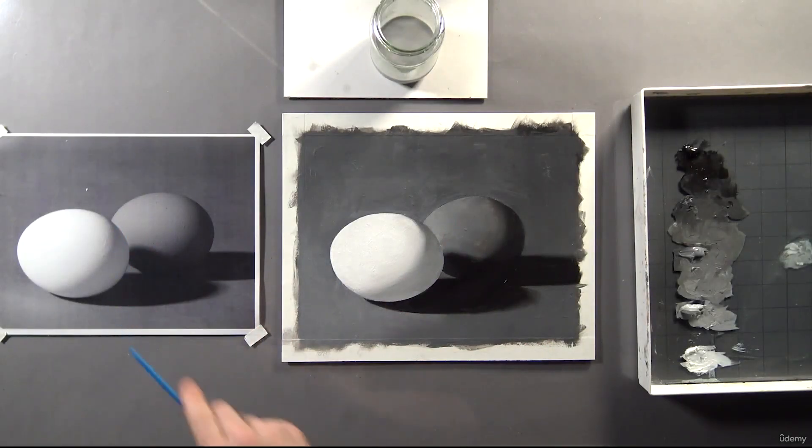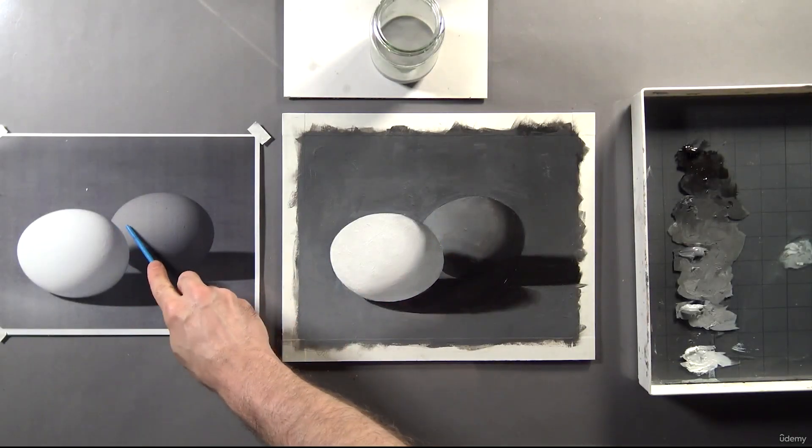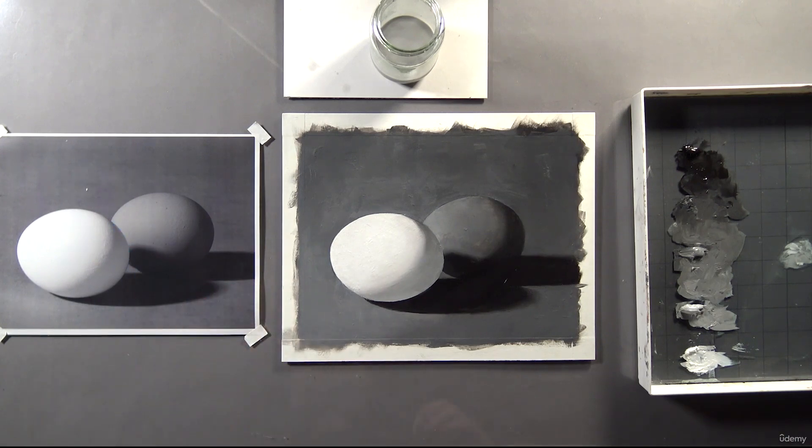I'll move to the darker egg next. Now that the values in my painting are getting closer to the ones in the reference, it's easier to see which values need to be adjusted.